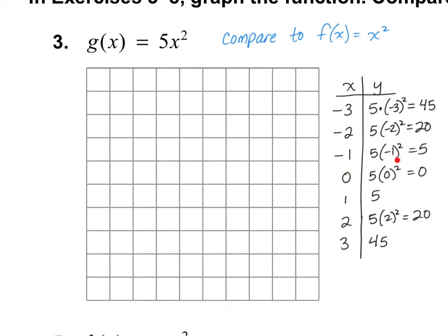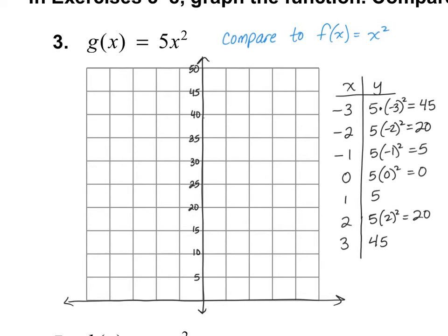And 0 gives us 0, so this is our vertex — the lowest point. We know all y values are positive, so the x-axis goes at the bottom and the y-axis in the middle, counting by 5s to get up to 45. Plotting the points: negative 3 at 45, negative 2 at 20, negative 1 at 5, and 0 at 0.